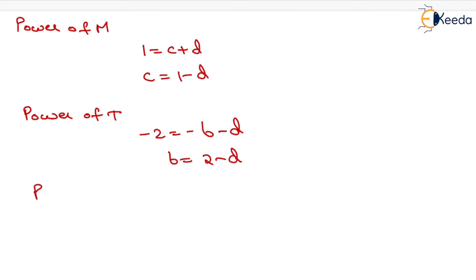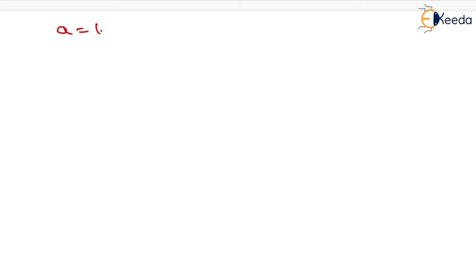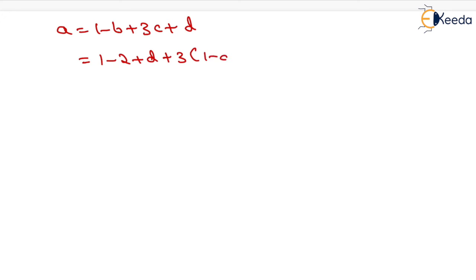Similarly, equating the power of L gives 1 equals A plus B minus 3C minus D. So A equals 1 minus B plus 3C plus D. Substituting the values of B and C: A equals 1 minus (2 minus D) plus 3 into (1 minus D) plus D, which gives A equals 2 minus D.